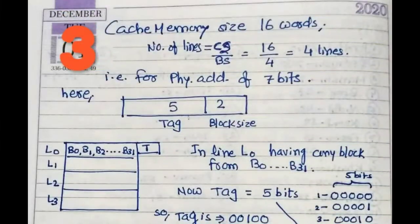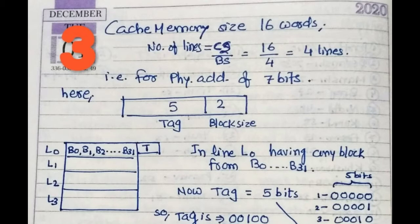Now discuss the cache memory. The size here is 16 words. We want to find first the number of lines. This equals CS/BS, cache size by block size. 16/4 means 4 lines: L0, L1, L2, and L3. Each line L0, L1, L2, and L3 can have any block from B0 to B31.